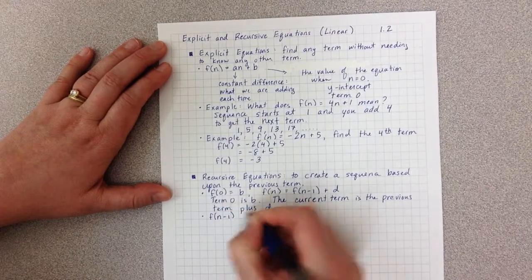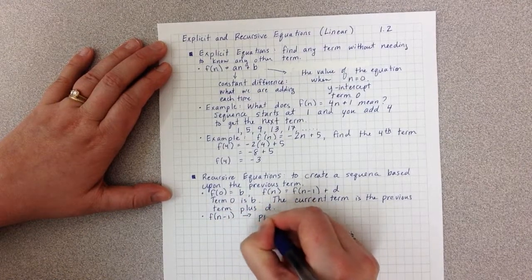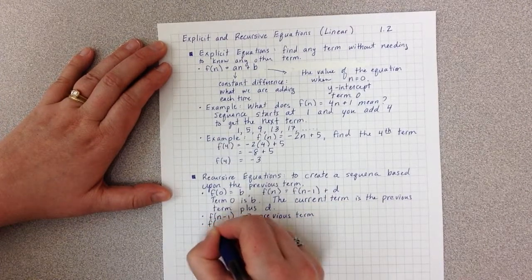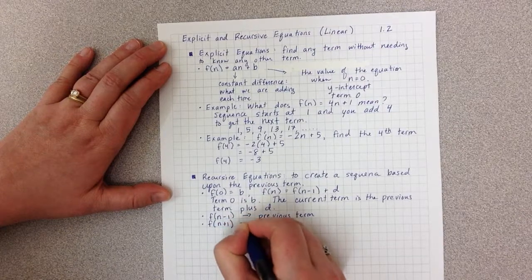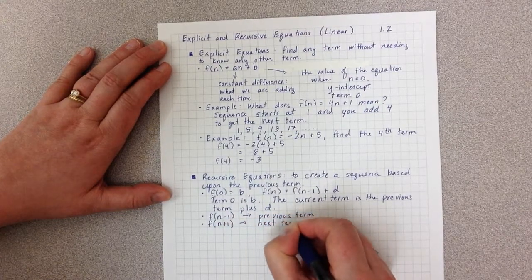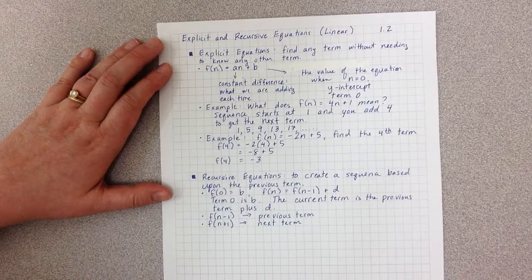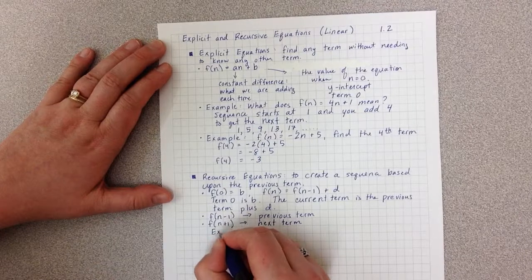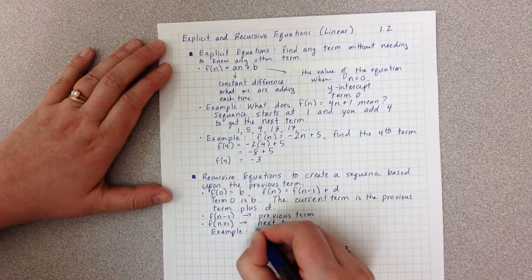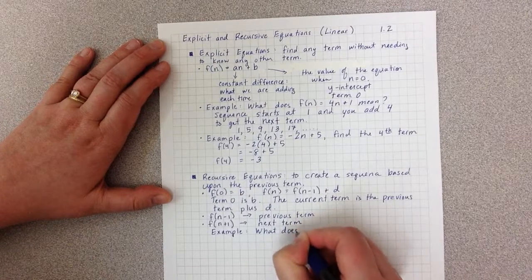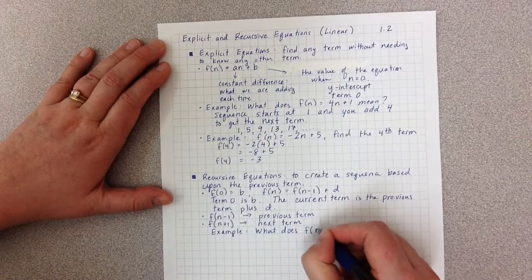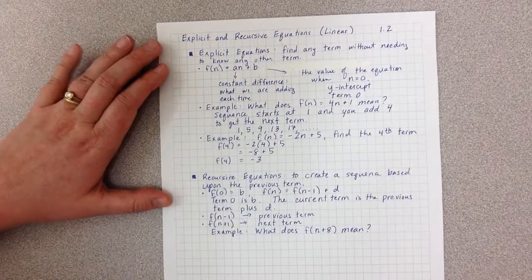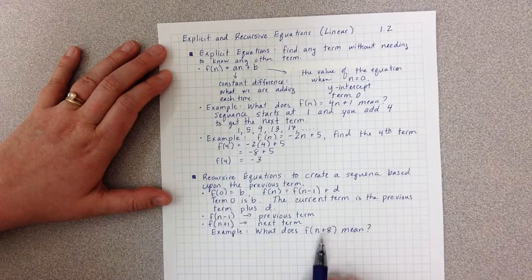So a couple of other notes here. f(n minus 1) means previous term. f(n plus 1) means the next term. So let's do a quick example with this. What does f(n plus 8) mean?